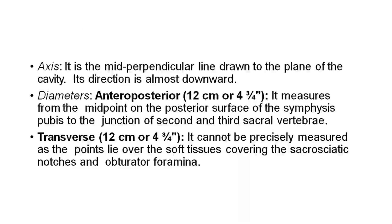Axis of the cavity: The mid-perpendicular line drawn to the plane of the cavity — its direction is almost downward. Diameters: The anteroposterior diameter measures from the midpoint of the posterior surface of the symphysis pubis to the junction of the second and third sacral vertebrae. Transverse is 12 cm. It cannot be precisely measured as the points lie over the soft tissues covering the sacrosciatic notches and obturator foramina.